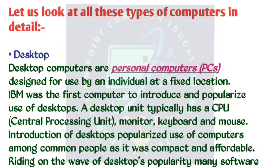Let us look at all these types of computers in detail. Desktop computers are personal computers (PCs), designed for use by an individual at a fixed location. IBM was the first computer to introduce and popularize use of desktops. A desktop unit typically has a CPU (central processing unit), monitor, keyboard, and mouse.